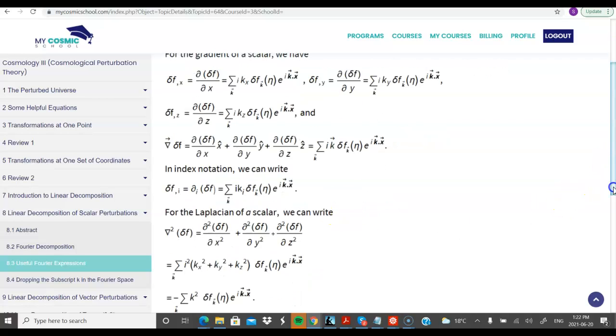So what is the Fourier part of gradient of delta f? The Fourier part for a gradient of delta f is iota k vector delta f k. So in Fourier space, the gradient of delta f becomes iota k vector delta f k.